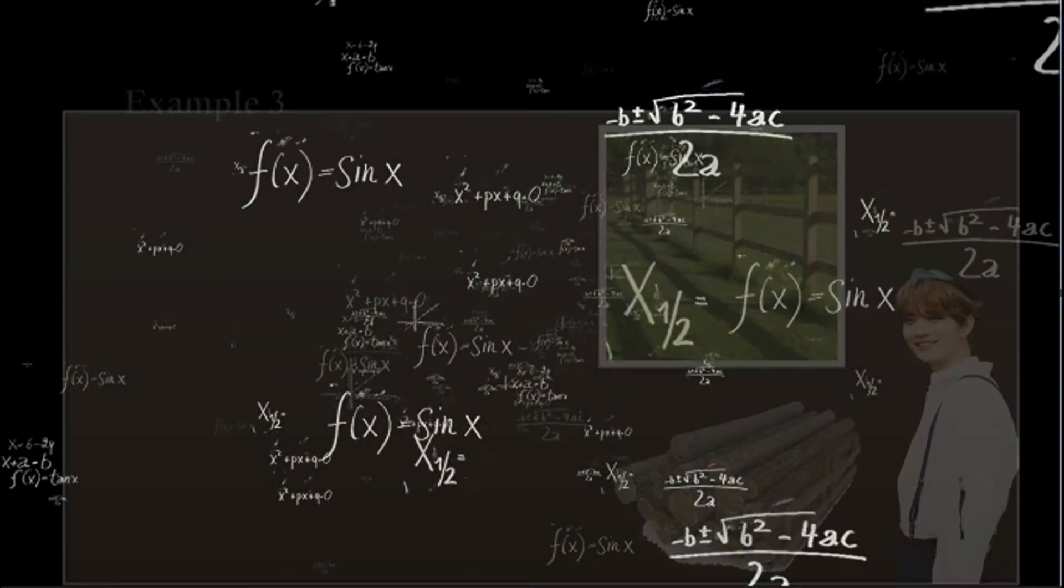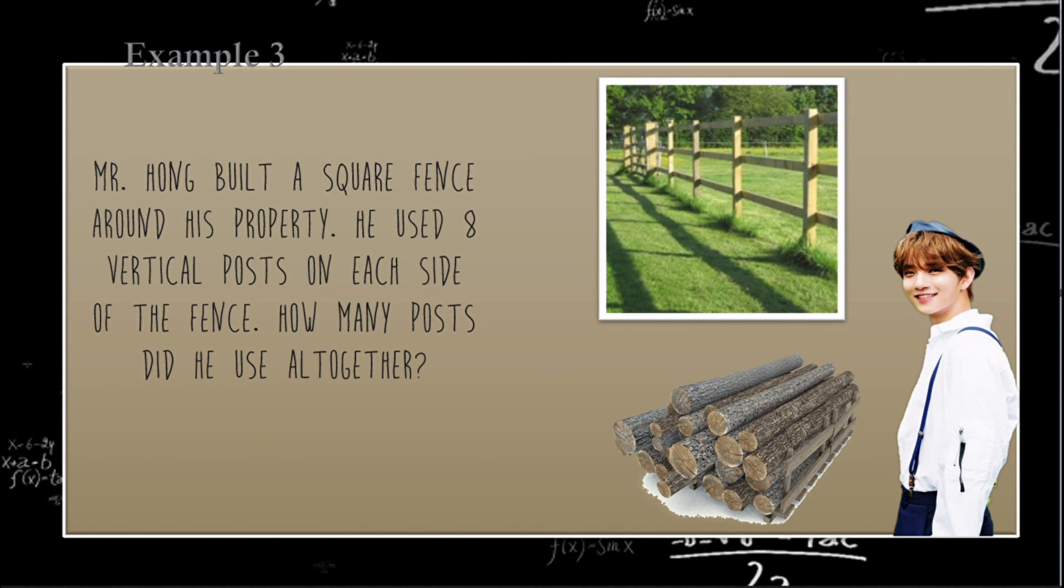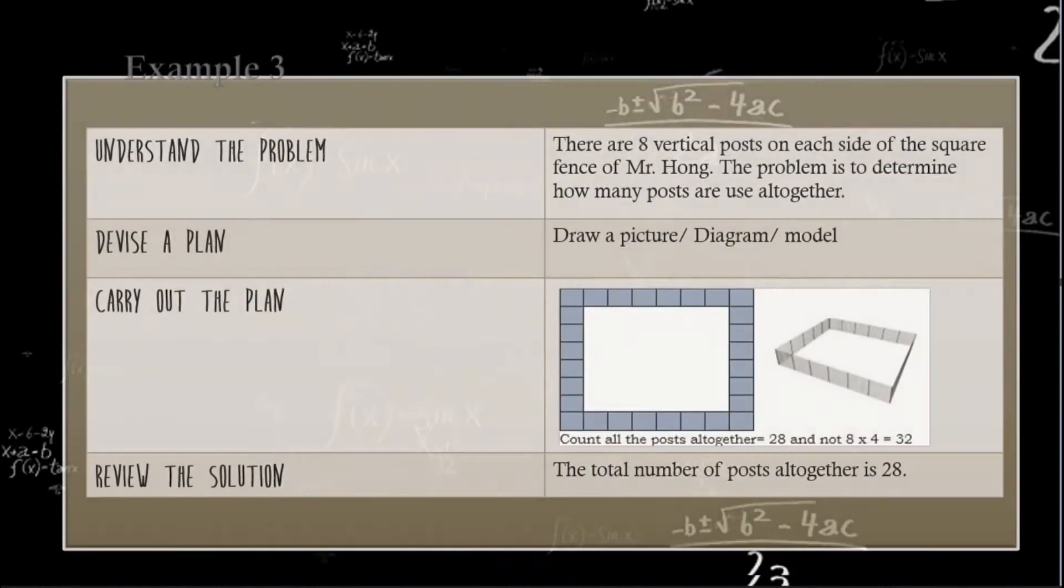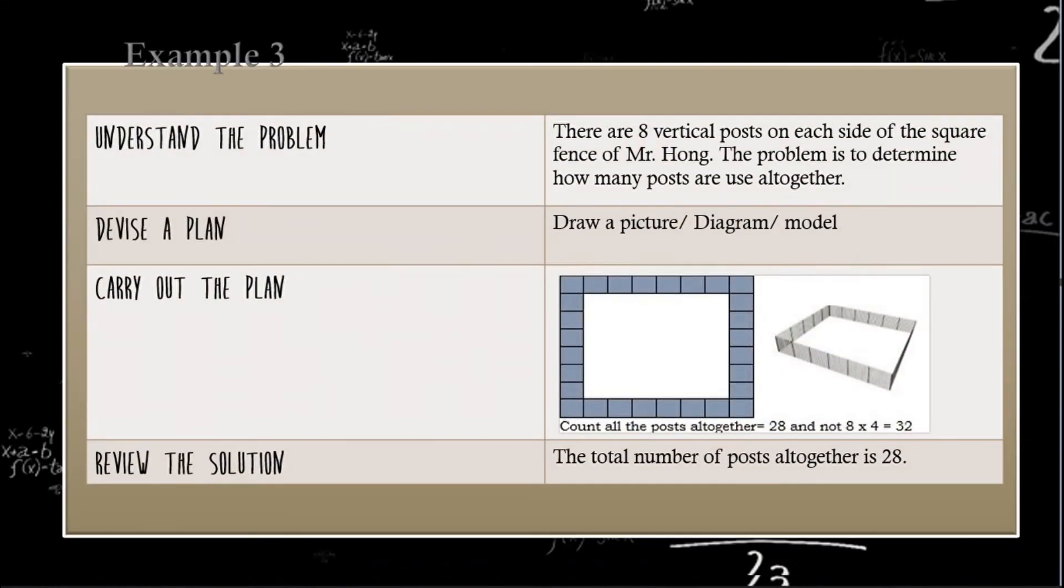For the next and last example, Mr. Hong built a square fence around his property. He used 8 vertical posts on each side of the fence. How many posts did he use altogether? To understand the problem, there are 8 vertical posts on each side of the square fence of Mr. Hong. The problem is to determine how many posts are used altogether. Draw a picture, diagram, or model will be the device.